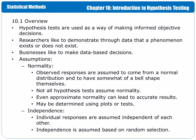Not all hypothesis tests assume normality. There are some that don't require normality, and if such is the case, then you don't have to check this assumption. Even approximate normality can lead to accurate results. Because of the central limit theorem, we are able to get fairly accurate results in hypothesis tests even if the data are not normal themselves.